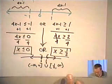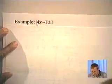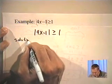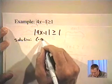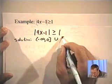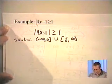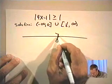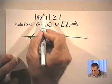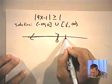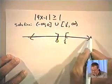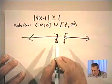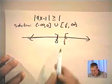Looking at that example again — the absolute value of 4x minus 1 greater than or equal to 1 — our solution is all the points between negative infinity and 0, union with the points between 1/2 and infinity. This means we can pick any point in those intervals, plug it into our inequality, and it will give us a true statement. The only values that would not give a true statement are the values between 0 and 1/2.